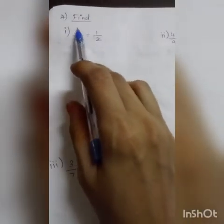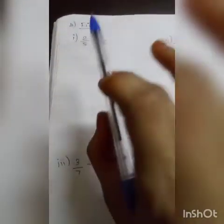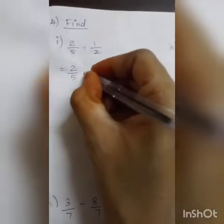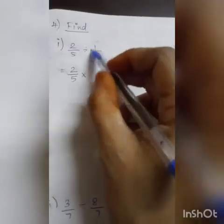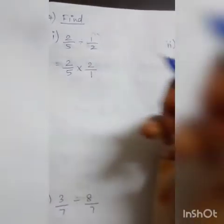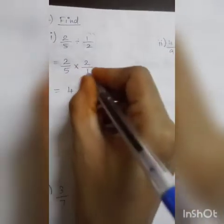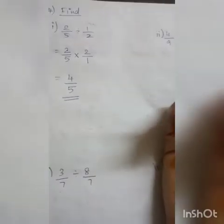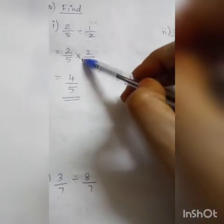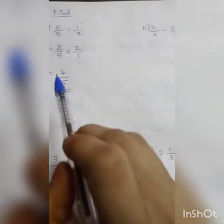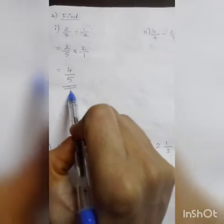Now, question 4 of this section: dividing a fraction and a fraction. Previously we divided whole numbers and fractions; here we divide two fractions. Example: 2/5 divided by 1/2. Division becomes multiplication, and 1/2 becomes its reciprocal 2/1. No cancellation possible. 2 twos are 4, 5 ones are 5. This is a proper fraction, so the answer is 4/5 — no further conversion needed. To summarize: division becomes multiplication, the next number reciprocates, then multiply numerator by numerator and denominator by denominator.